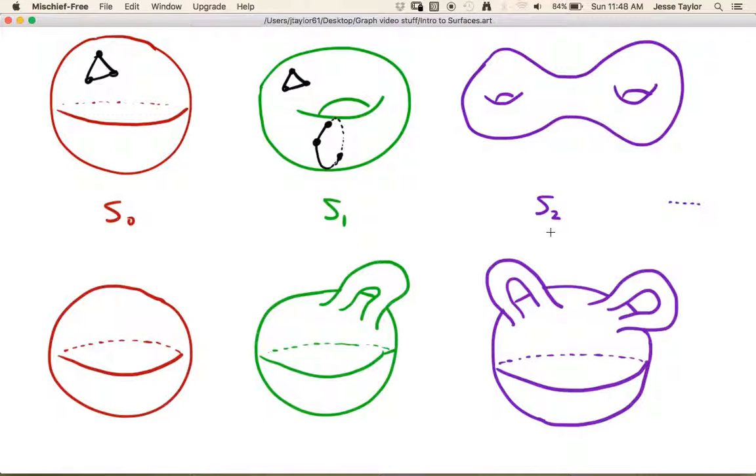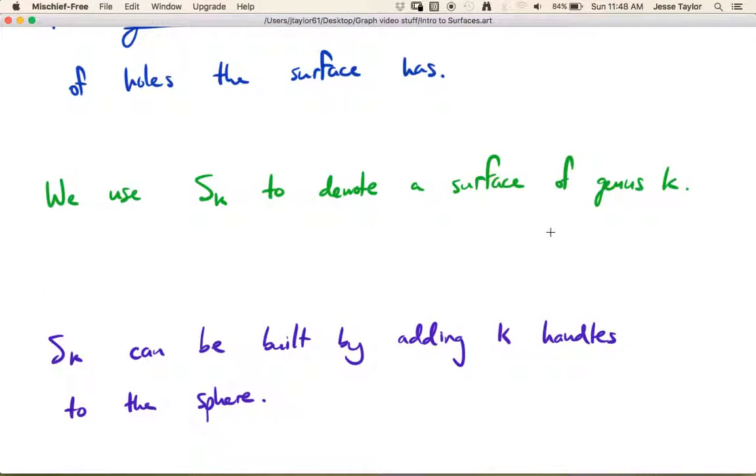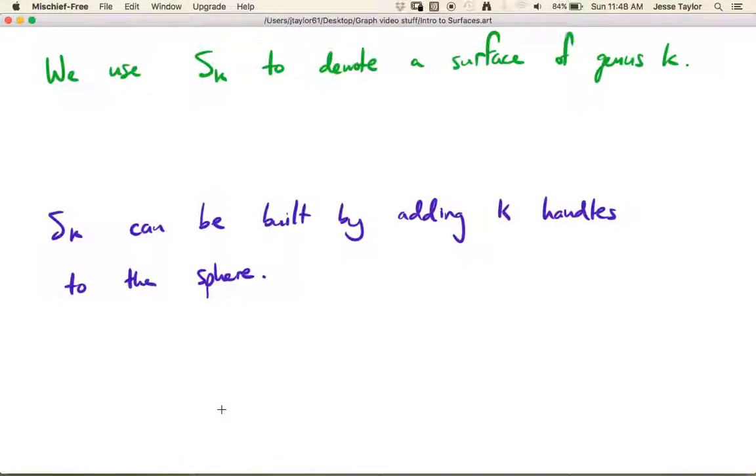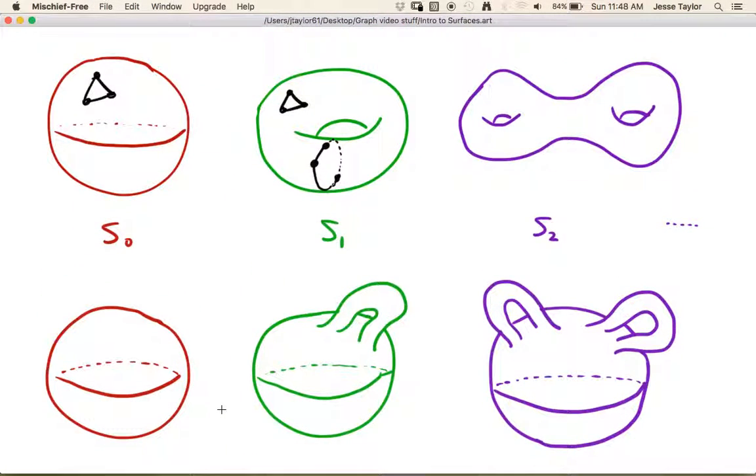All right, and we can build Sk by adding k handles to the sphere. That's what I was talking about above. So this is our brief introduction to what surfaces are. And so in the next video or two, we want to think about drawing graphs on these surfaces instead of just on the plane or just on the sphere. We want to start thinking about how we can draw graphs on the torus or how we can draw graphs on the double torus, right?